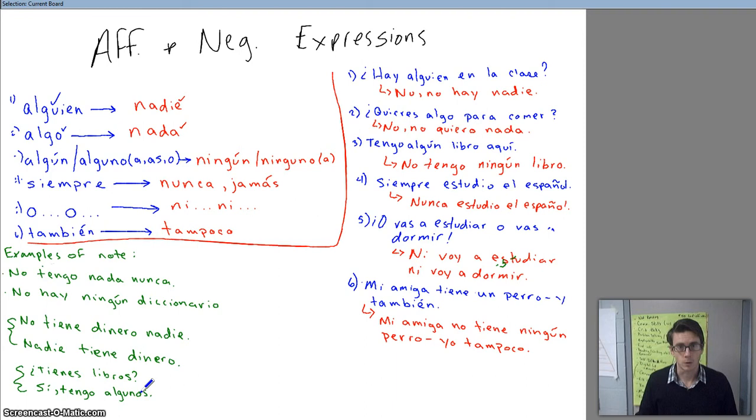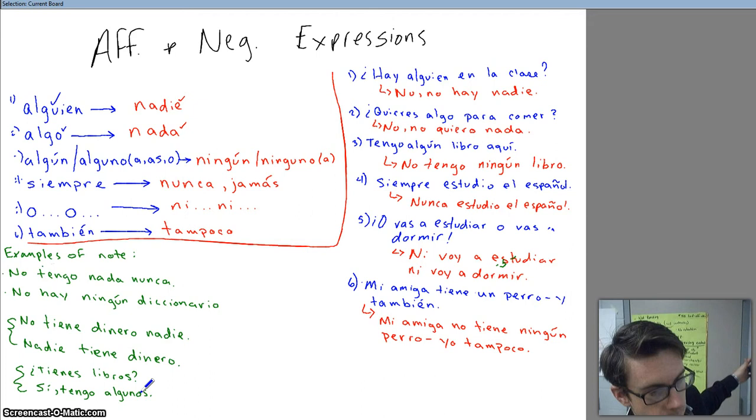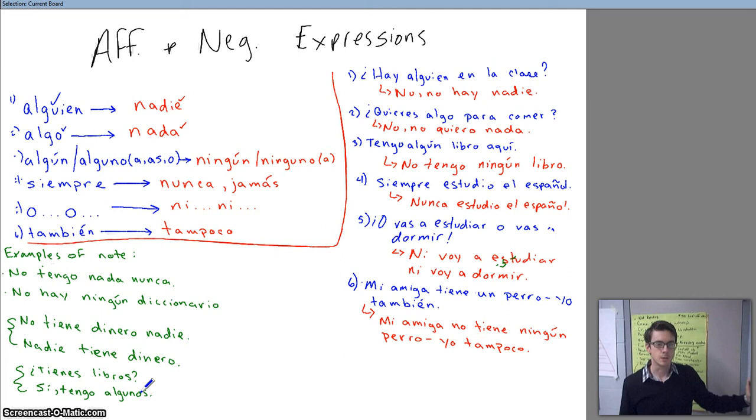Number seis. Mi amiga tiene un perro. Yo también. That should say yo. Let me fix that. Yo también. Mi amiga no tiene ningún perro. Yo tampoco. So the first one, my friend has a dog. Me too. The second one, my friend does not have any dog. Me neither. Alright?